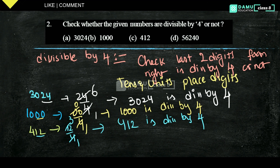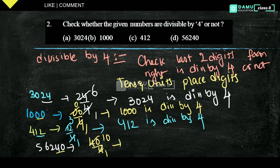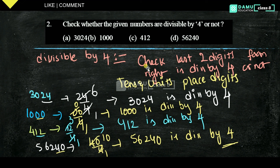Our last number is 56240. The last 2 digits are 40. Is 40 divisible by 4? Yes, 4 × 10 = 40. Therefore 56240 is divisible by 4. That is how we check the divisibility rule for 4.